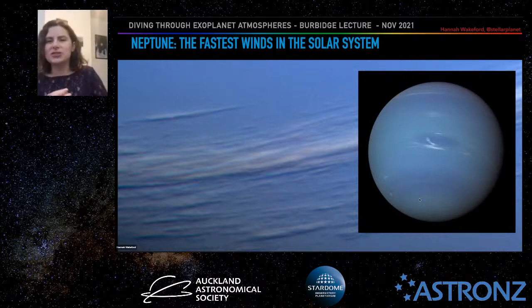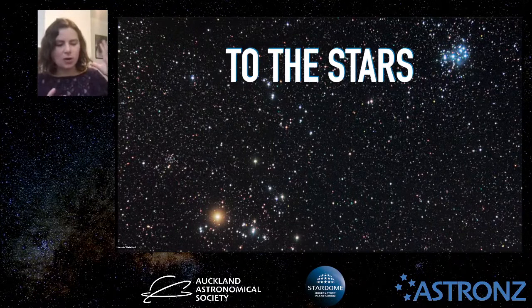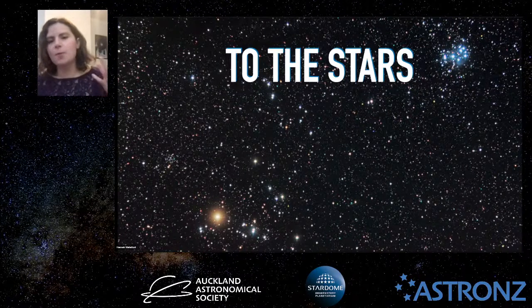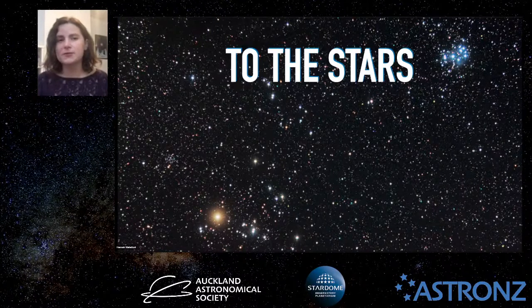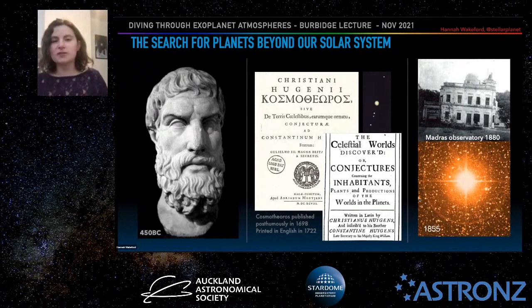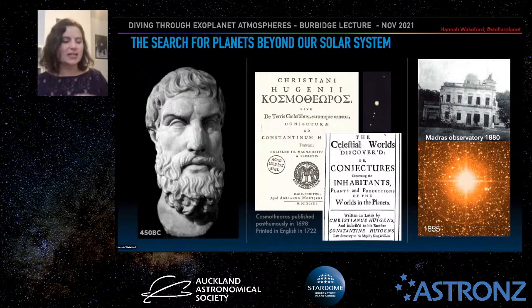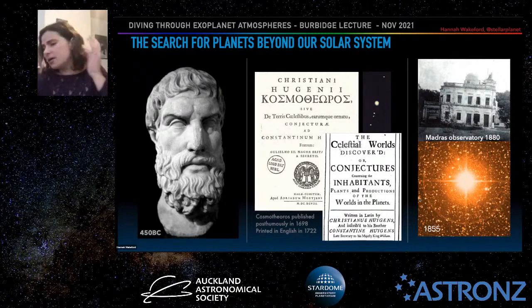I'm going to take us now out to the stars and ask the question: what planets are out there? How can we look for them, and what can we learn about the nature of these planets' atmospheres? That journey starts in 450 BC with Epicurus, who believed the universe was infinite and that the number of atoms was infinite — and stated that, therefore, there must be an infinite number of worlds out there, both like and unlike our own. The Epicurean philosophy said there had to be other planets.